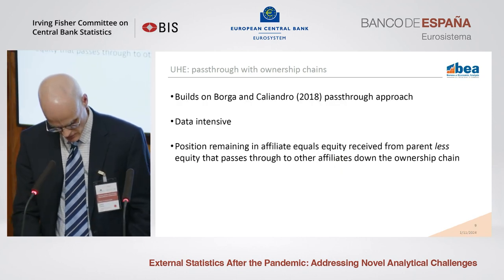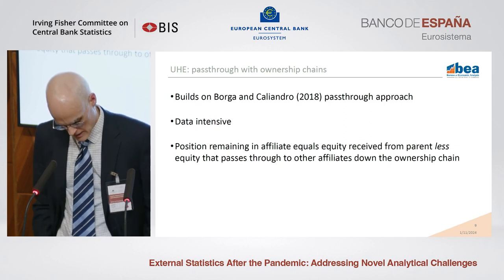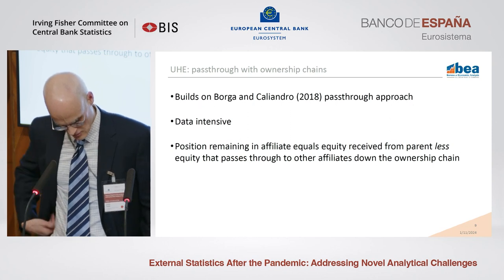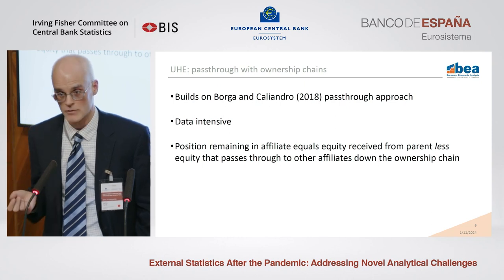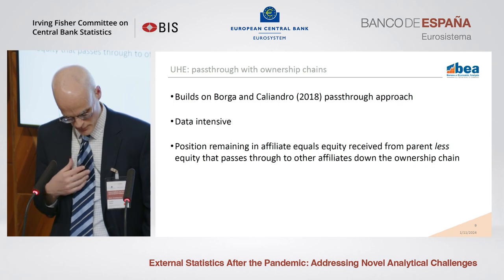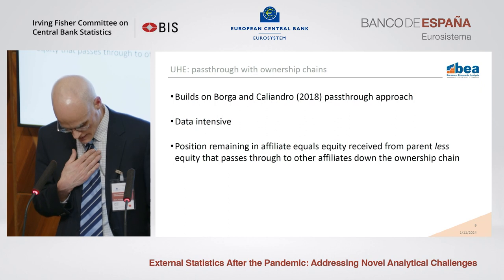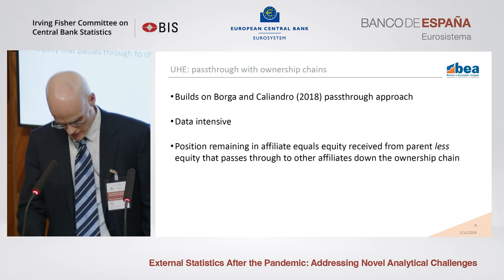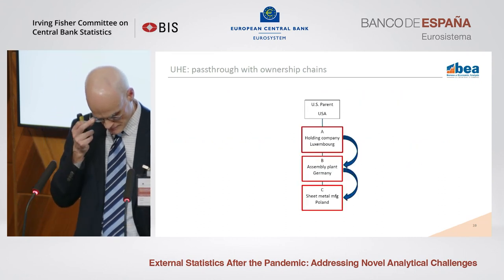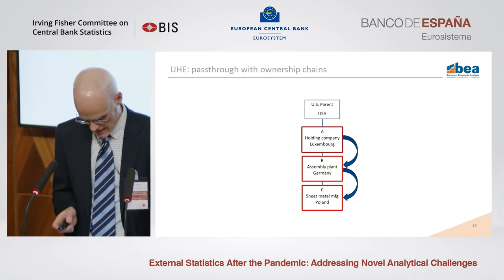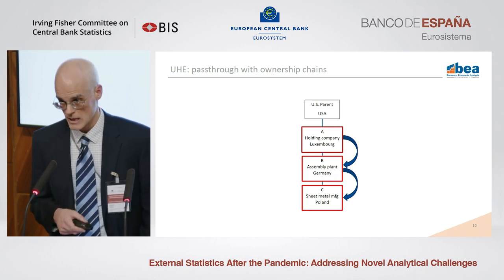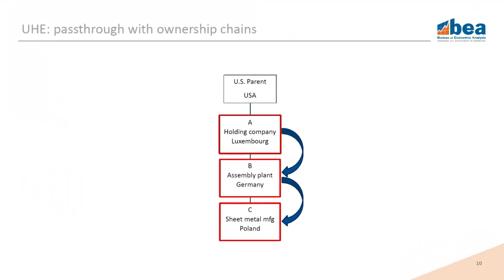The pass-through-with-ownership-chains method built upon Borga and Caliandro's 2018 NBER working paper on pass-through capital. It reallocates the position by calculating the proportion that passes through to affiliates lower down in the ownership chain. For example, if an affiliate had $1 billion in owner's equity and $800 million passes through to other affiliates, the reallocated position in this affiliate is $200 million. Using the same structure, with the entire position recorded in A, the method moves position to B (calculating pass-through equity) and then on to C, working iteratively through the chain until reaching the bottom.